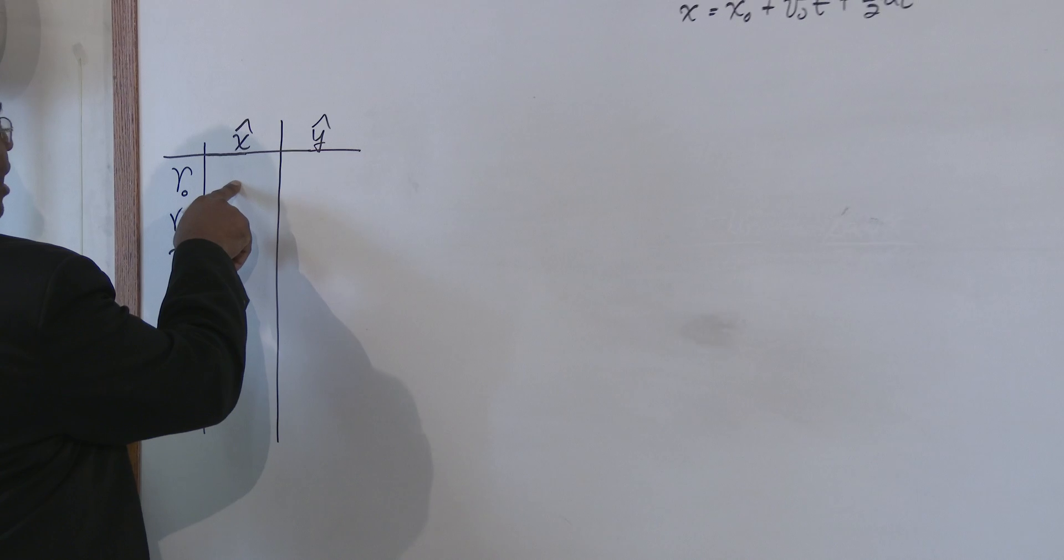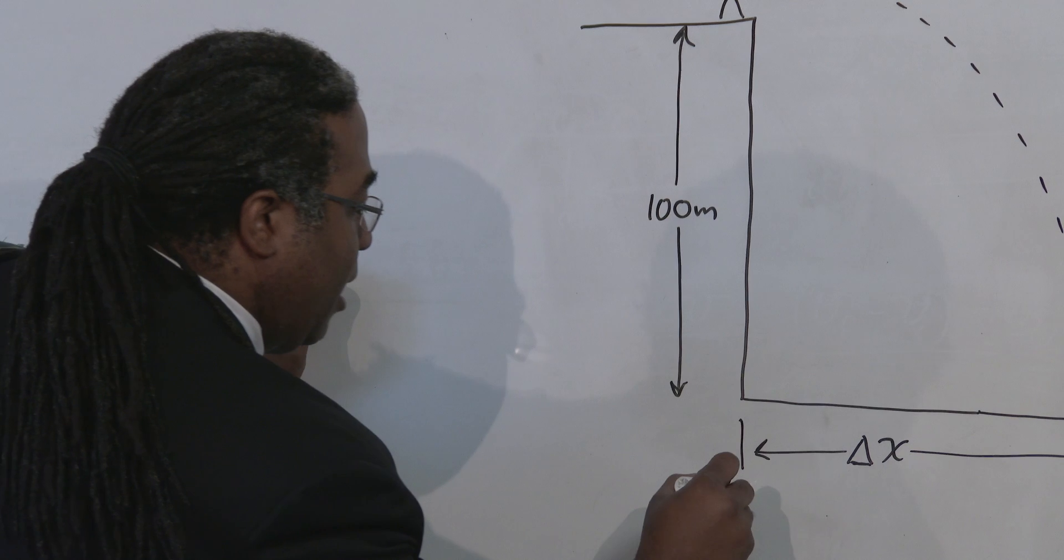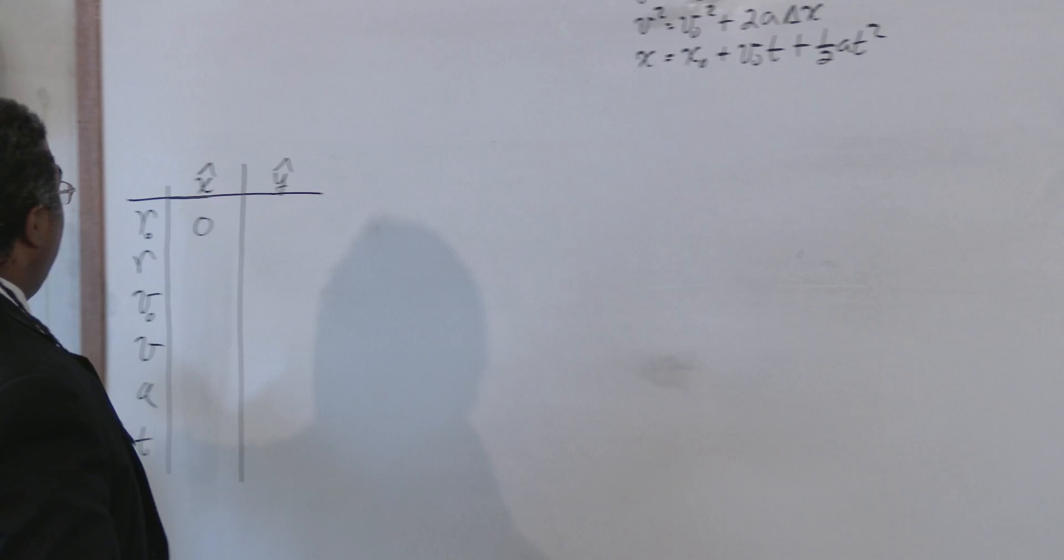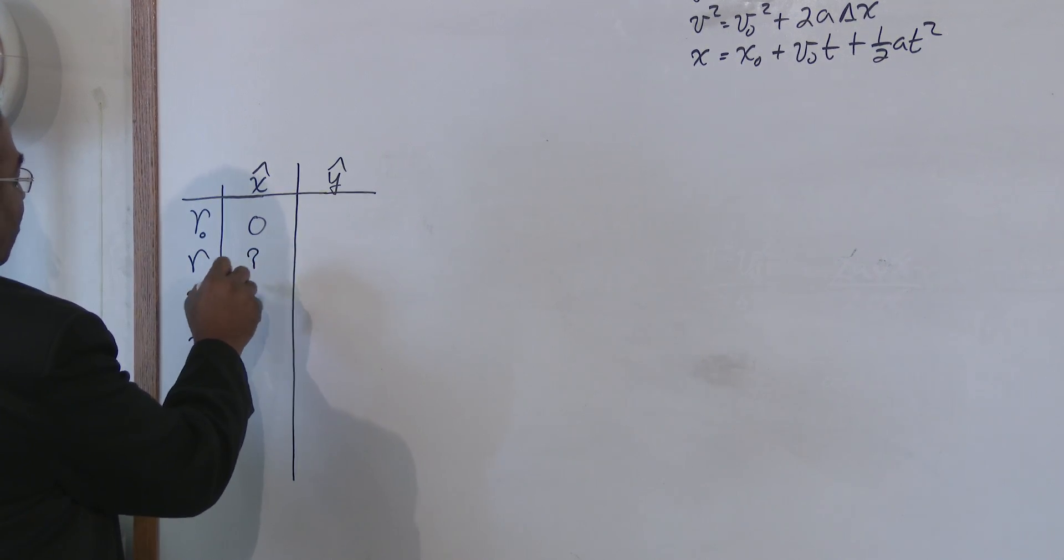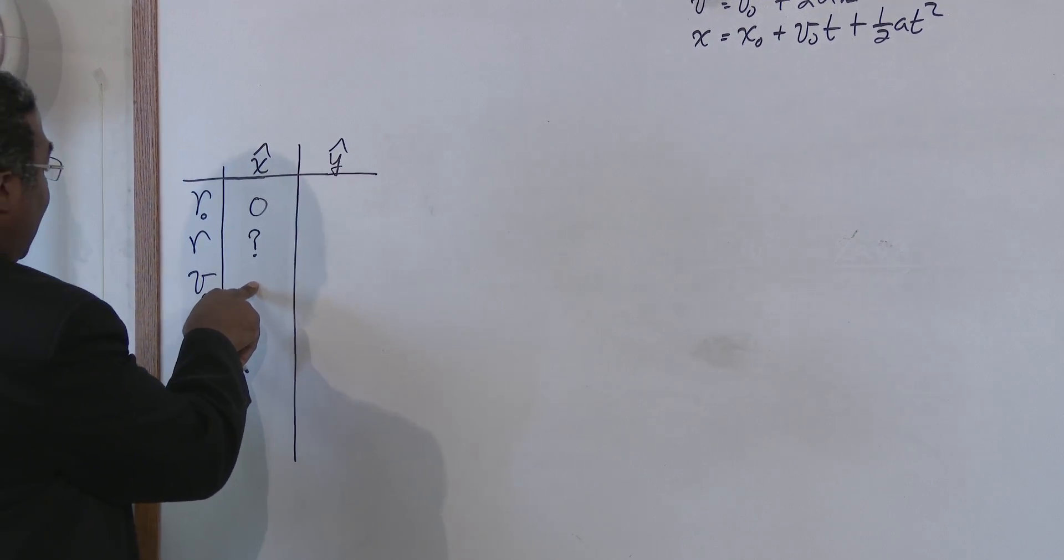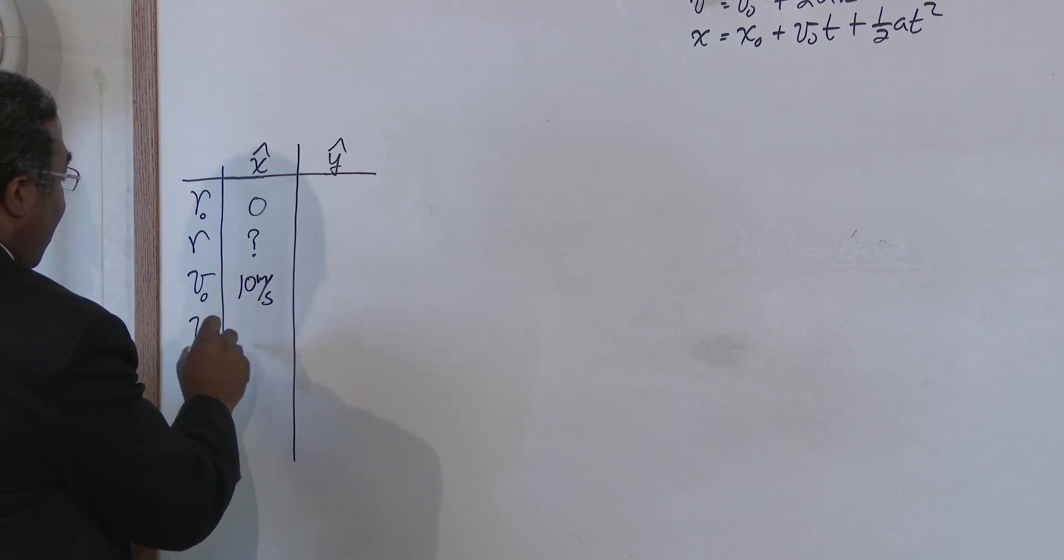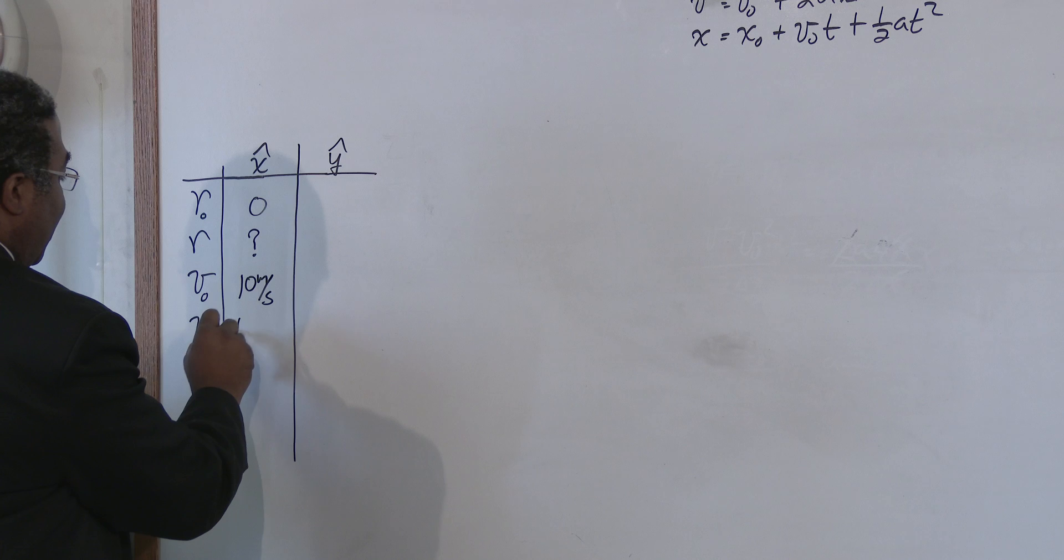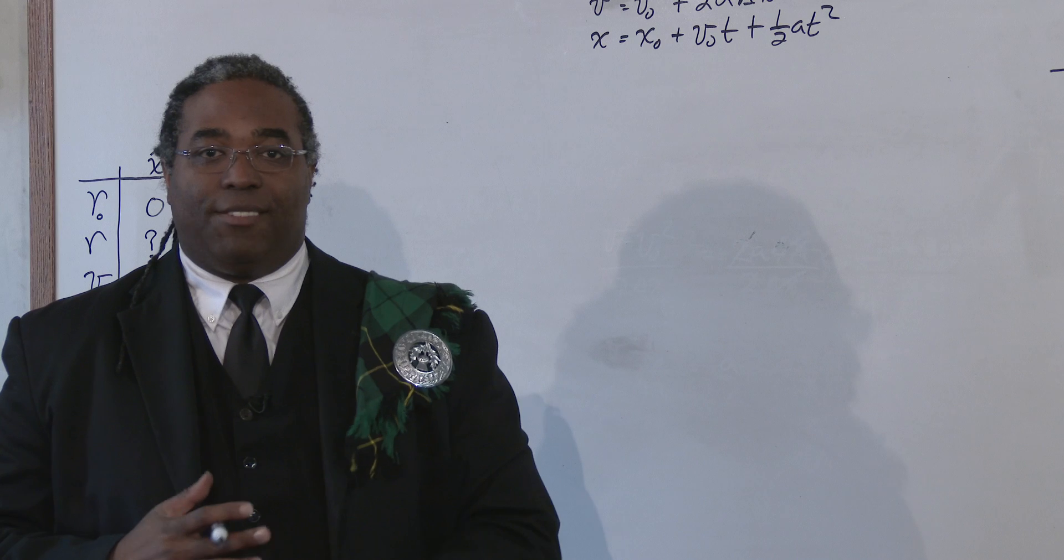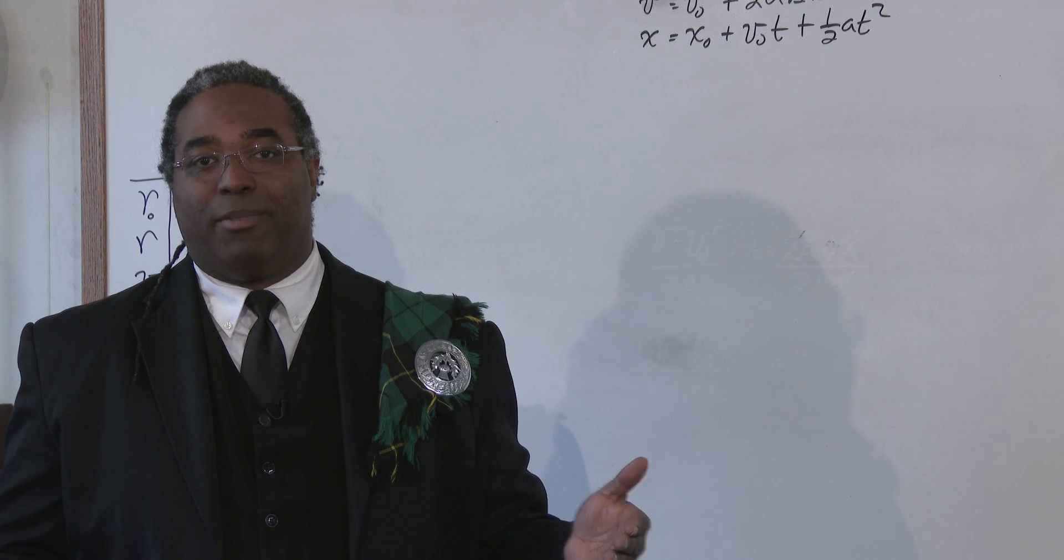So, our initial position in the x direction is zero because I'm going to choose relative to here. This is zero and this is whatever my delta x is. So we don't know what the final position is because that's what we're trying to find out. So, our initial velocity in the x direction is 10 meters per second and our final velocity in the x direction is 10 meters per second. Why are they the same? Because we said earlier, the velocity doesn't change in the x direction. So the initial velocity and the final velocity in the x are going to be the same number because there's no change.